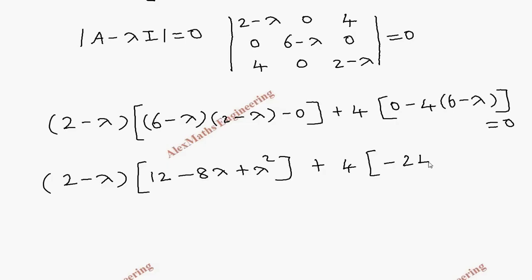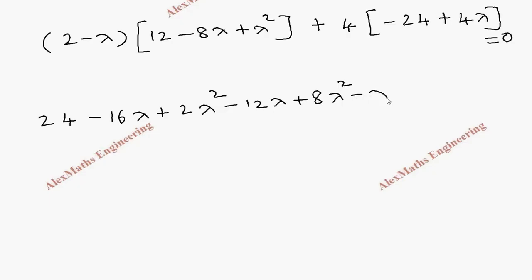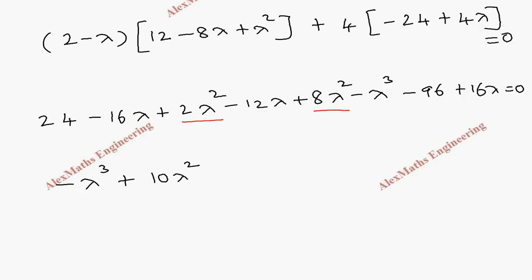Multiplying through, the 4 times minus 4(6 minus lambda) gives minus 24 plus 4 lambda. Expanding fully inside: 24 minus 16 lambda plus 2 lambda squared minus lambda squared plus 8 lambda squared minus lambda cubed minus 96 plus 16 lambda equals 0. Writing in order: minus lambda cubed, combining lambda squared terms gives plus 10 lambda squared, the minus 16 lambda and plus 16 lambda cancel, leaving minus 12 lambda, and a constant term.